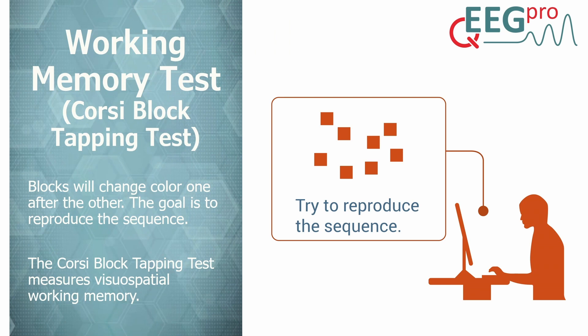The Corsi Block Tapping Test is a measure of visuospatial working memory. Working memory has been mainly associated with the frontal cortex, and impaired performance has been demonstrated in patients with frontal lesions, psychotic disorders, and depression. However, performance on the Corsi Block Tapping Test also relies on the integrity of the parietal cortex and the hippocampus, which have been associated with the processing of visuospatial information and memory processing.